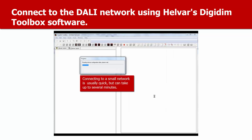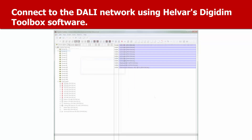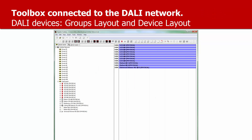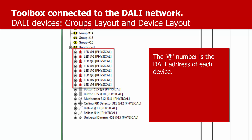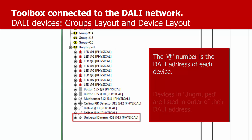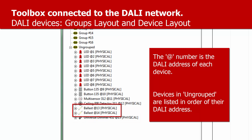Toolbox communicates with the DALI network to discover the DALI devices and their characteristics or properties. When Toolbox has discovered the DALI network information, you'll see something like this. The load interfaces and control devices are shown on the left in the Toolbox device tree. There are the LED drivers, the dimmer, and the electronic ballasts. There's the 312 multi-sensor and the 311 sensor.